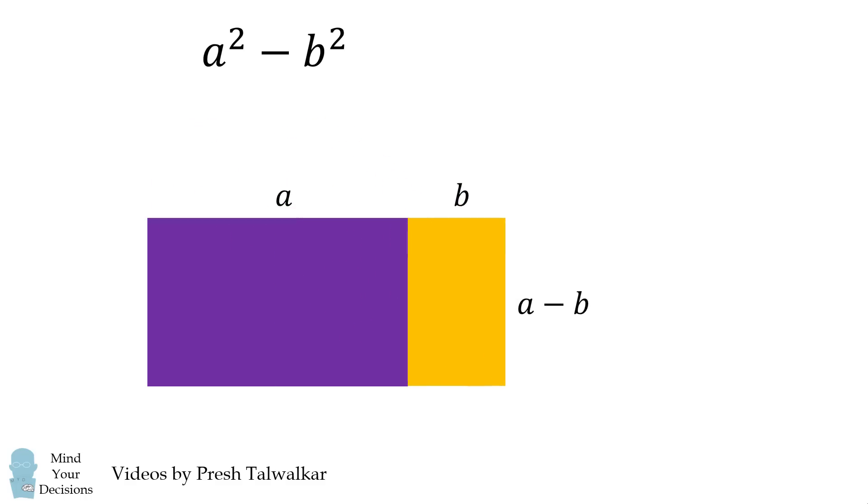When we do that, we end up with one long rectangle. One side is a minus b and the other side will be a plus b. The area of this rectangle is the product of these lengths. And that's the difference of squares formula.